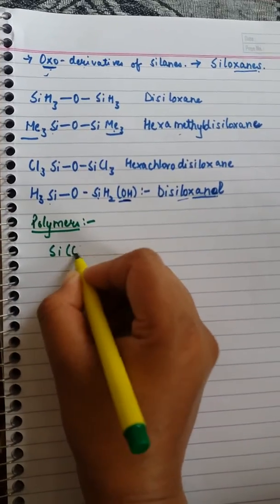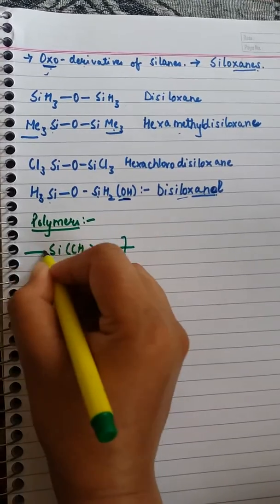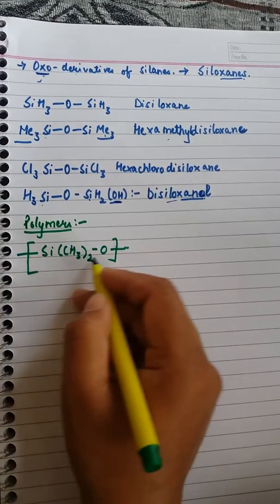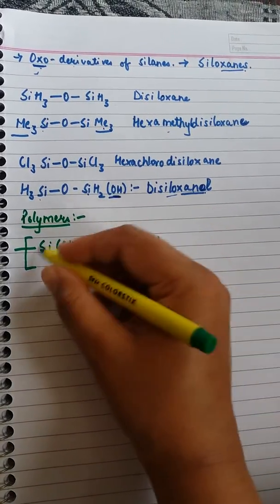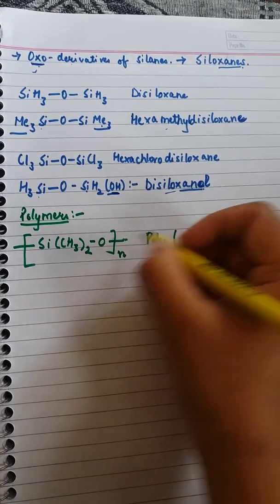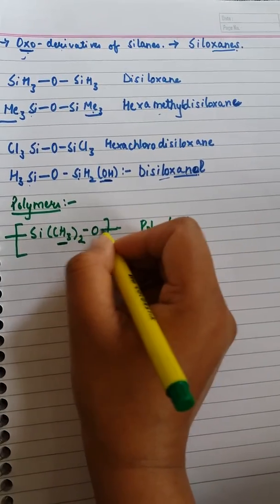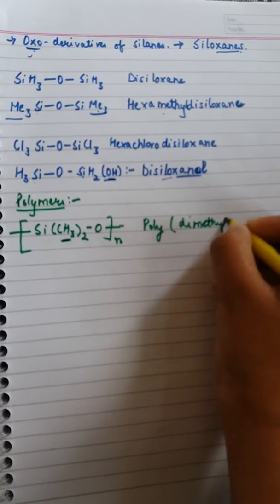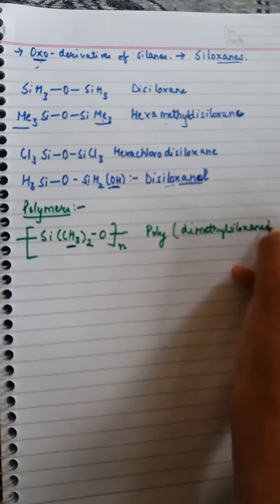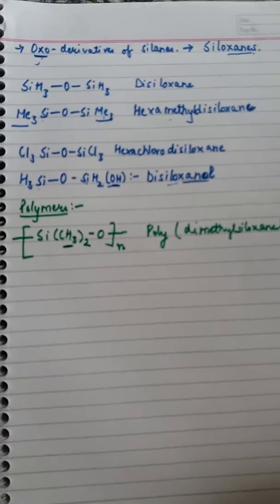For naming polymers of silicones: if we have a polymer containing two CH3 groups with an oxygen linkage repeated on both sides with another silicon subunit, we write 'poly' followed by brackets. It has two methyl groups with the same siloxane linkage, so it is named poly(dimethylsiloxane). In this way we can name other silicone polymers similarly.